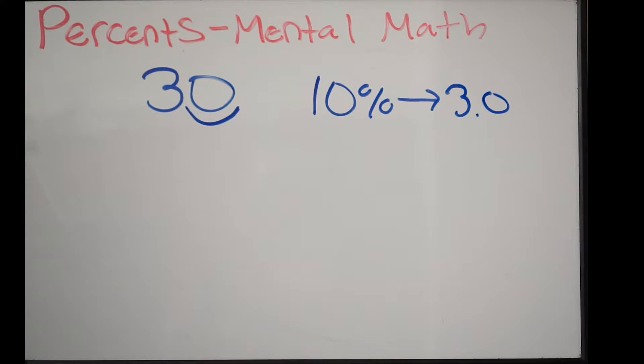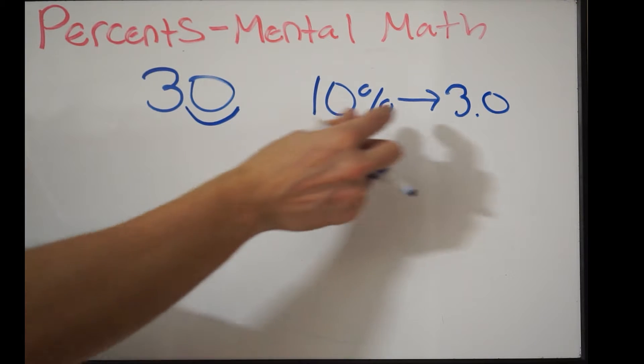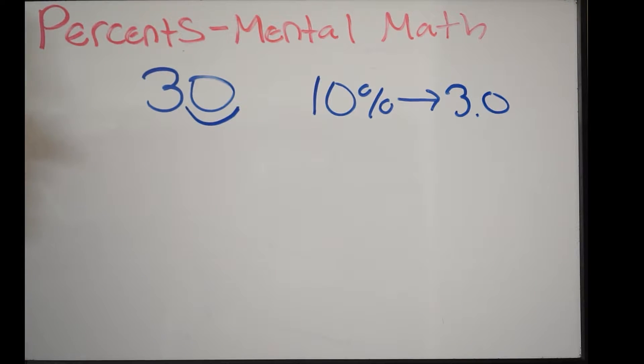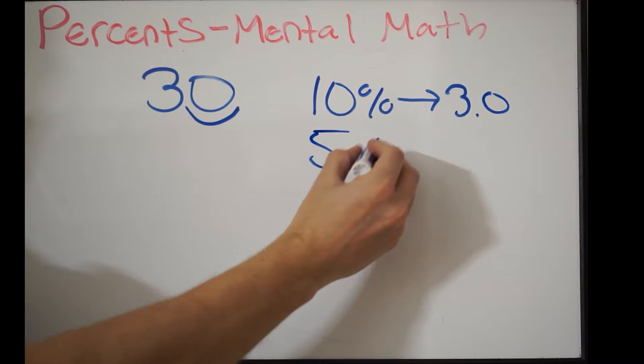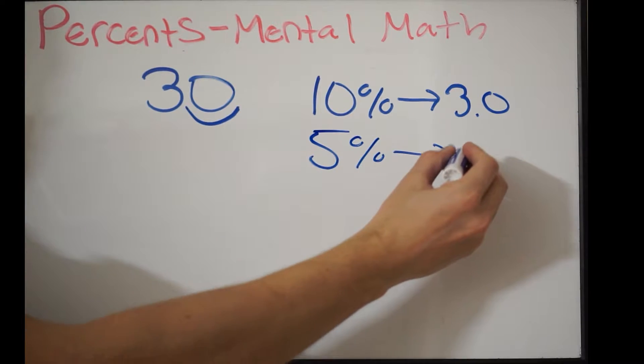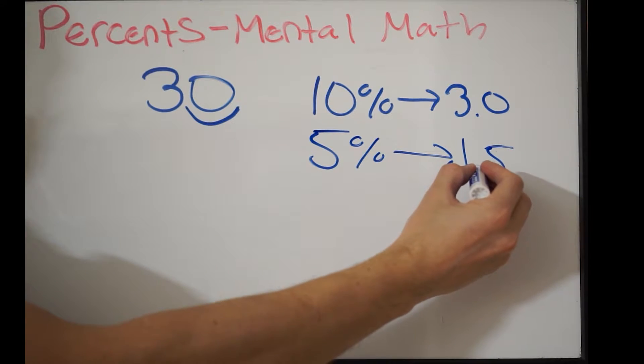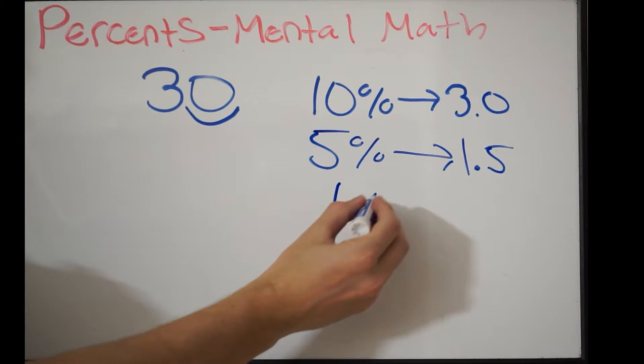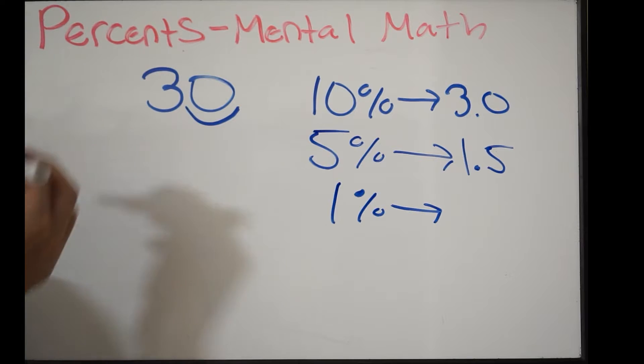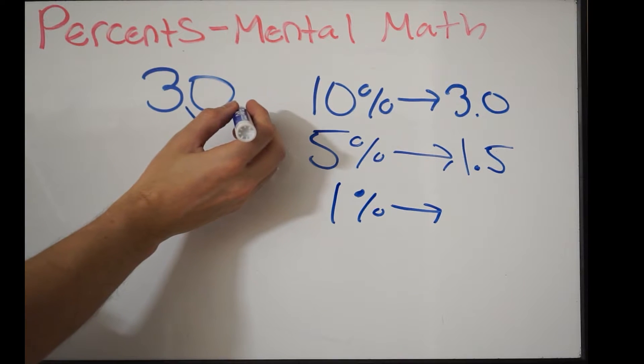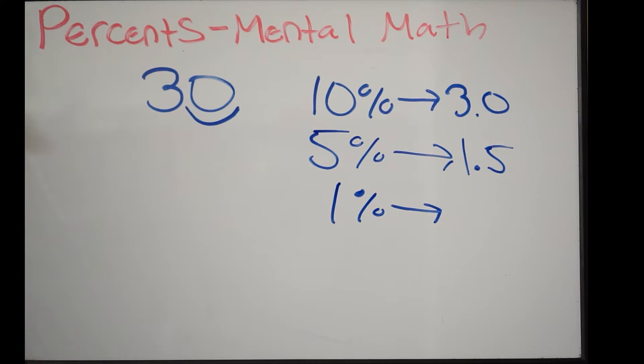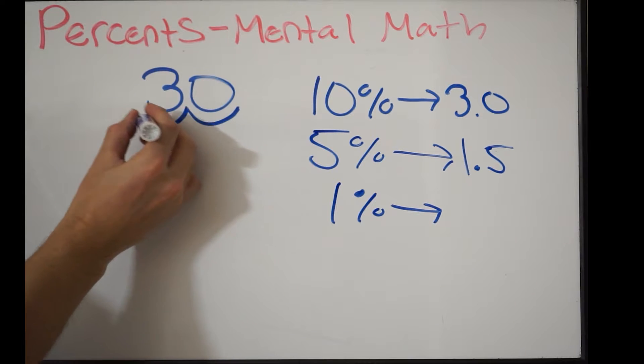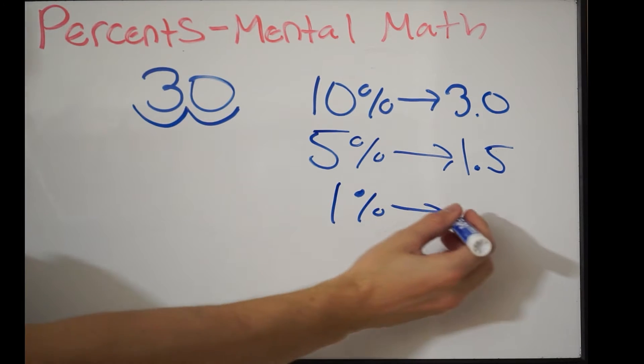This is going to work with any number. If I know 10%, I can get 5% because all I have to do is take my 10% value and divide it by 2. So 5% is going to be 1.5. And to find 1%, this is very simple as well. Instead of moving the decimal point over to the left one place, you're going to move it two places. That's going to give you 0.3.